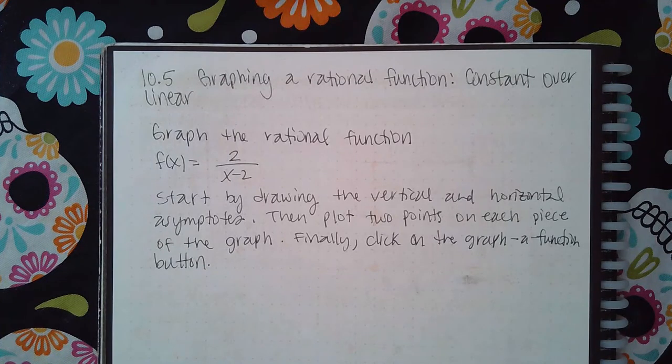This topic is 10.5 graphing a rational function constant over linear. Start by drawing the vertical and horizontal asymptotes, then plot two points on each piece of the graph. Finally, click on the graph of function button.